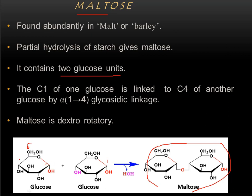For the first glucose, the functional carbon is present at C1, and for the second glucose, the functional group is also present at C1. A glycosidic linkage is formed: the C1 carbon of one glucose is linked to the C4 of another glucose by a linkage called the alpha 1-4 glycosidic linkage, with the removal of a molecule of water.